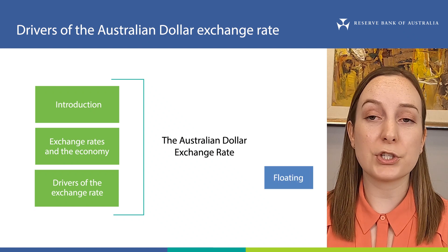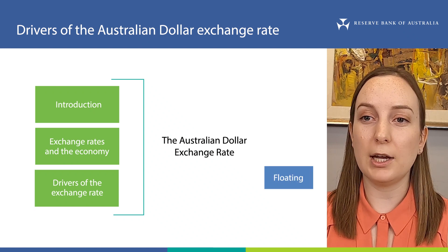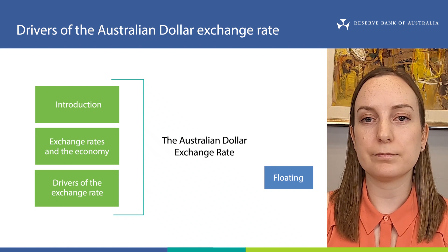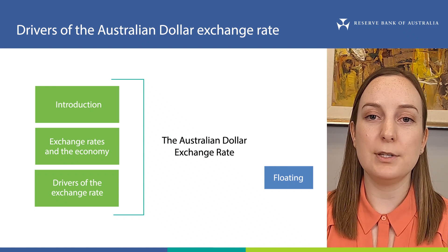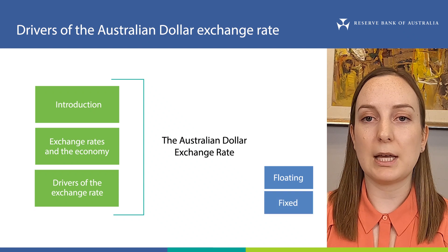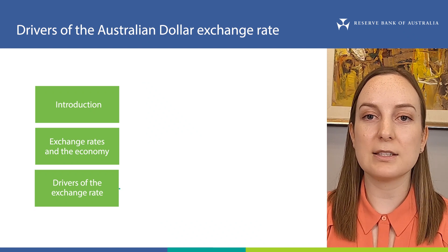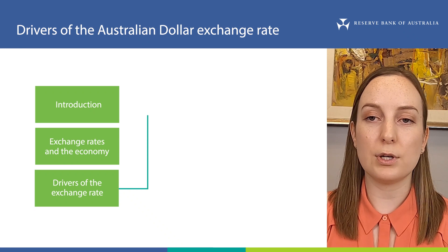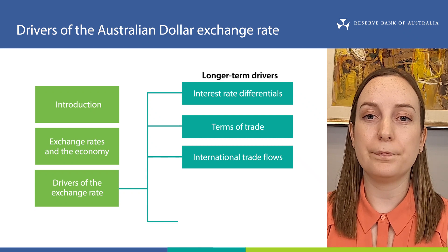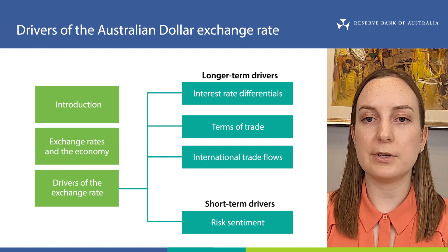The Australian dollar is a floating exchange rate. This means that its value is determined by changes in the supply of and demand for Australian dollars in foreign exchange markets. See our explainer on exchange rates and their measurement for more on different exchange rate regimes: floating, fixed and managed. In this video, we will look at some factors that affect the supply of and demand for Australian dollars. Some of these have longer term effects on the value of the Australian dollar, while other factors influence the value over shorter periods of time.